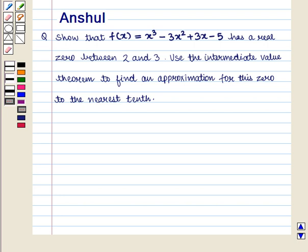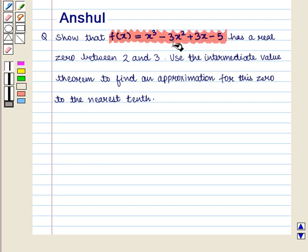Hello and welcome to the session. In this session we are going to discuss the following question. The question says to show that the function f(x) = x³ - 3x² + 3x - 5 has a real zero between